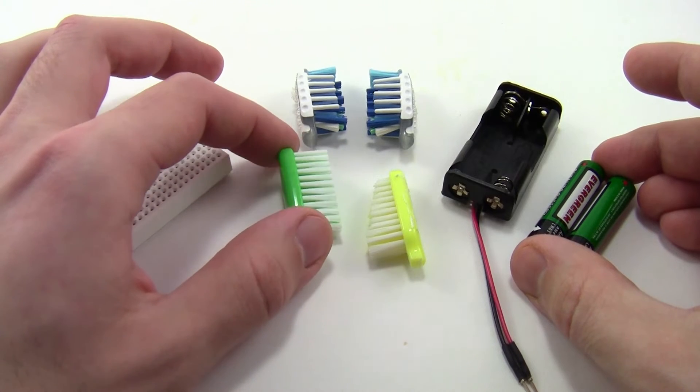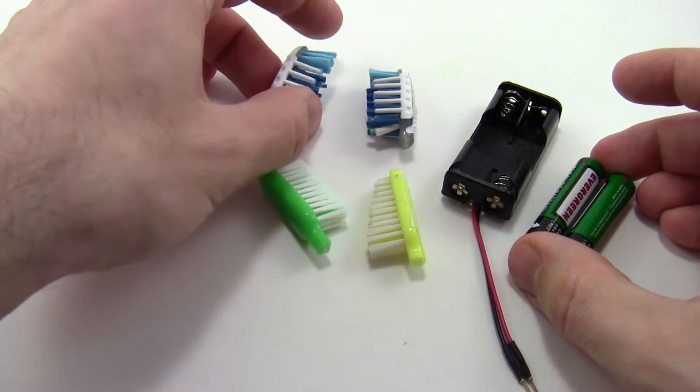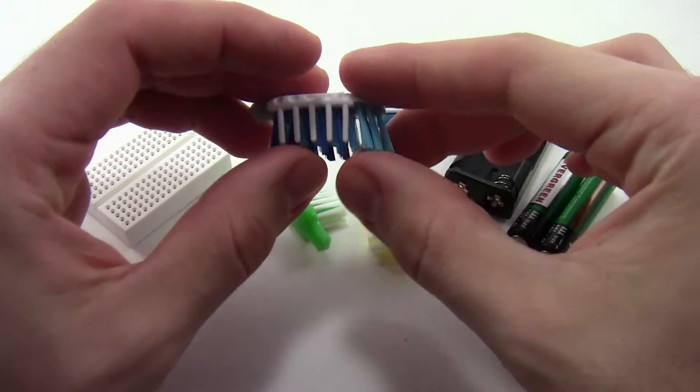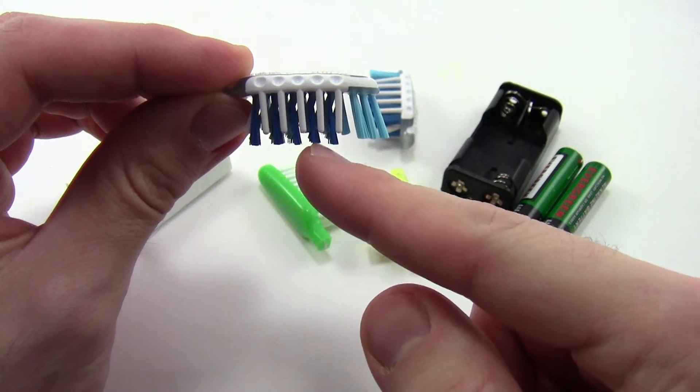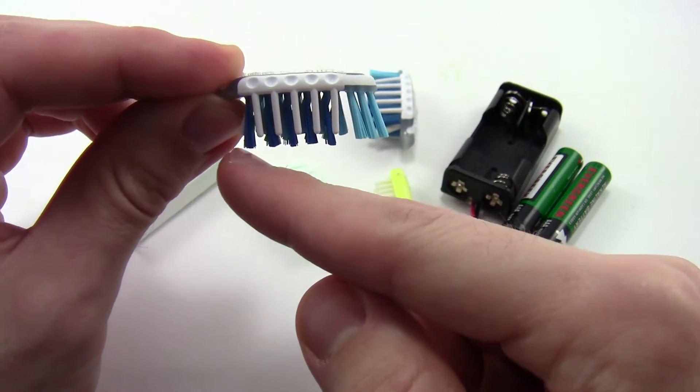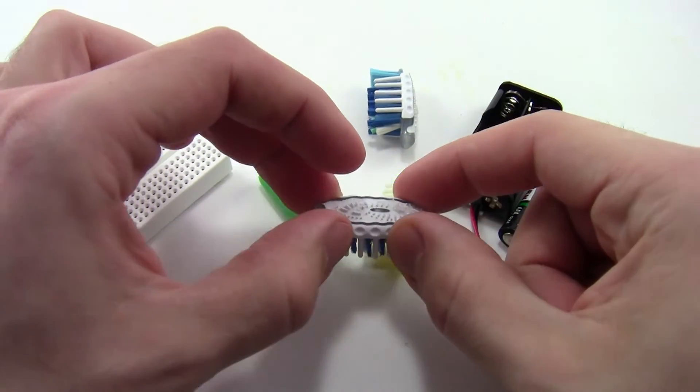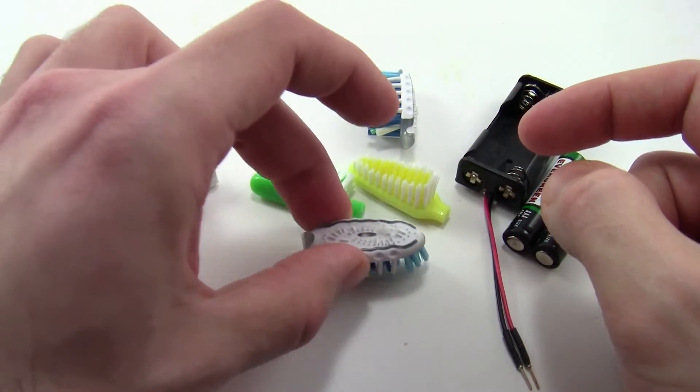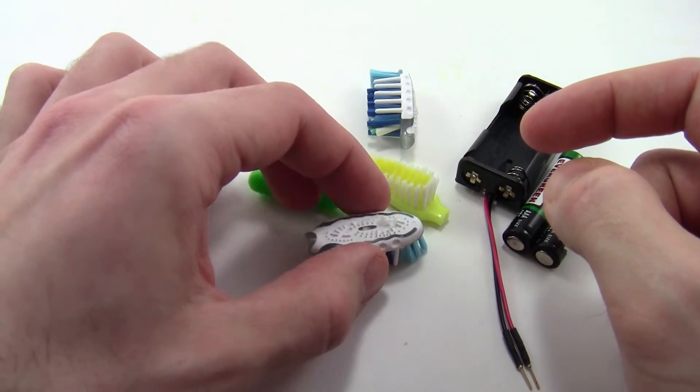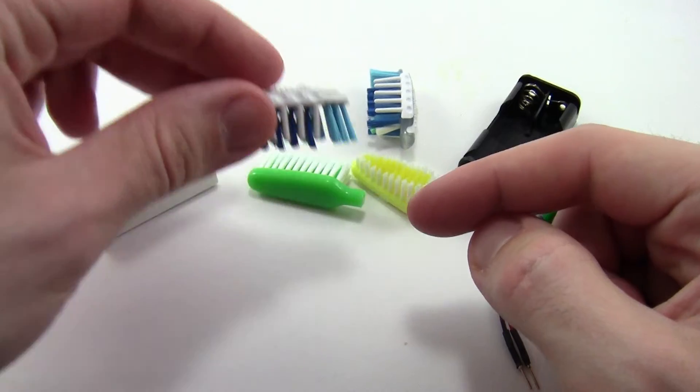You will also need two toothbrush heads, which are not included in the kit. There's one important note about the toothbrush heads here. The type with slanted bristles work much better. The longest bristles are all slanted backwards, and when you put that down, that's going to help the robot move forward because those bristles are all pointed in one direction. So when the robot vibrates, it buzzes along and moves opposite the direction of that slant.